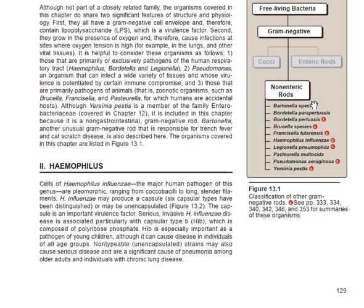Under the non-enterograms, we have different species. The first is the Bartonella species. The second is the Bordetella parapertussis species. We also have Borrelia species, Francisella tularensis, Haemophilus influenzae, Legionella pneumophila, Pasteurella multocida, Pseudomonas aeruginosa, and Yersinia pestis.